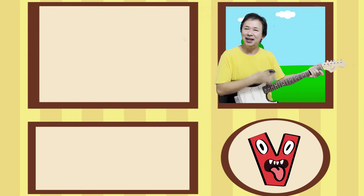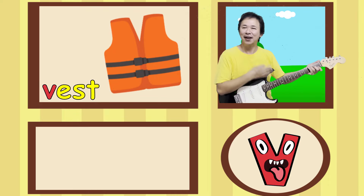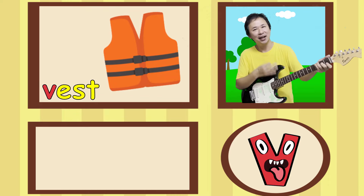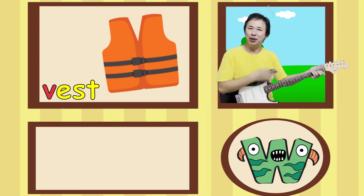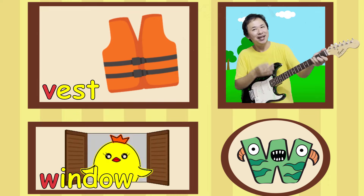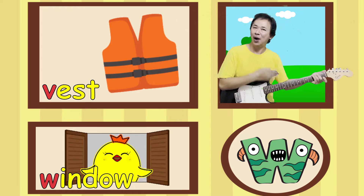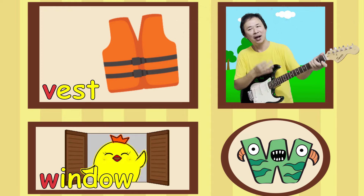V is for vest. v, v, v. W is for window. w, w, w.